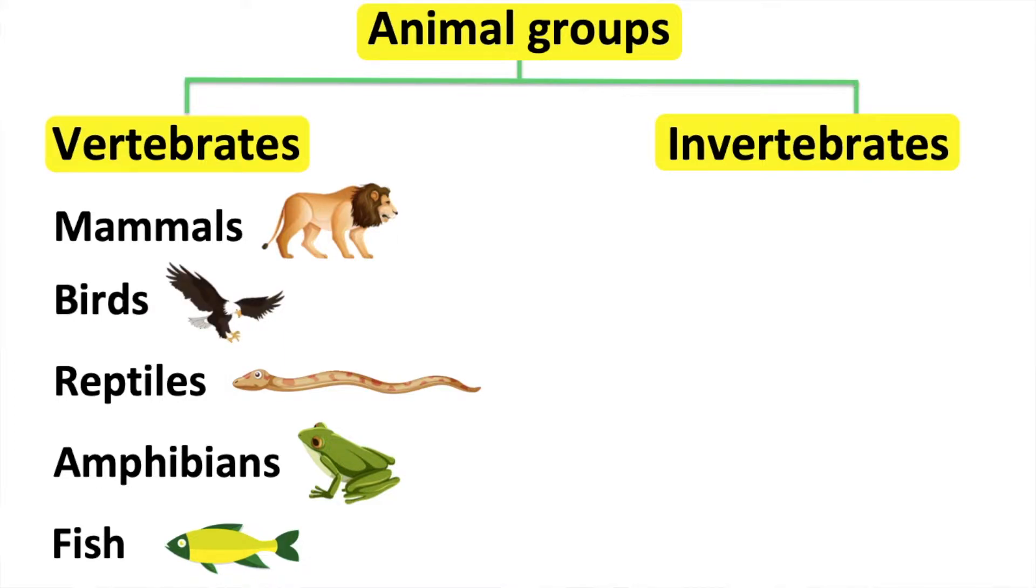Birds have feathers and they use their lungs to breathe. Birds lay eggs and their temperature is usually stable. Therefore, they are warm-blooded animals. For example, an eagle.